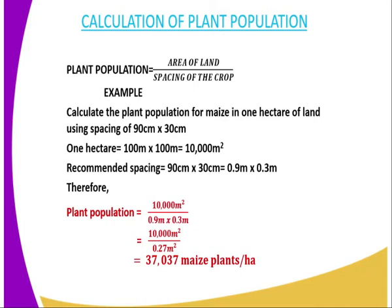For example: calculate the plant population for maize in one hectare of land using spacing of 90 centimeters and 30 centimeters. One hectare is represented by 100 meters by 100 meters, and if you multiply, you get 10,000 square meters. To calculate the plant population, you multiply the spacing: 90 centimeters by 30 centimeters. Convert 90 centimeters to meters by dividing by 100 to get 0.9 meters, then multiply by 0.3 meters, since 30 centimeters divided by 100 equals 0.3 meters.